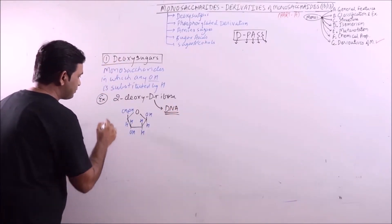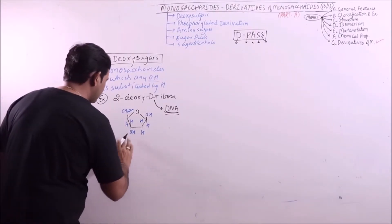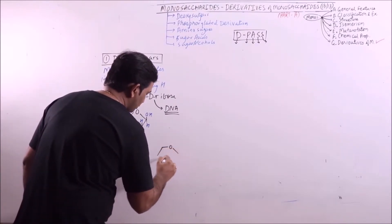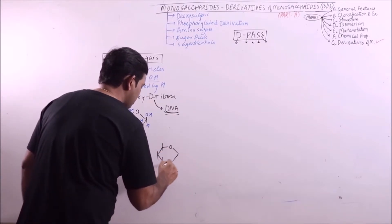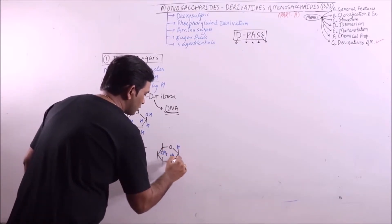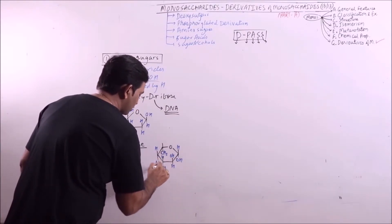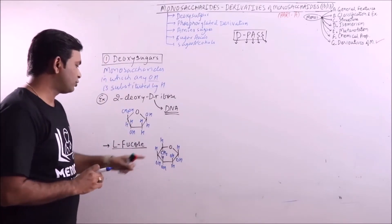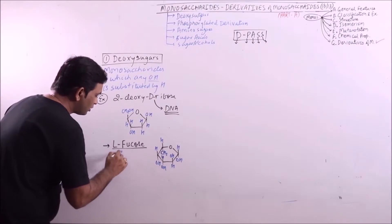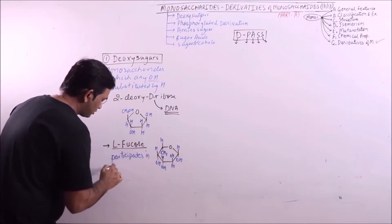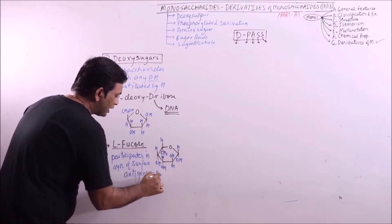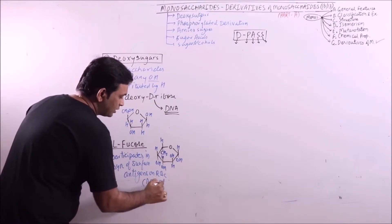Now the second example is L-fucose. This is L-fucose. Here we can see that the hydroxyl group is replaced by H. This L-fucose participates in synthesis of surface antigens on RBC, which participates in ABO blood group system.